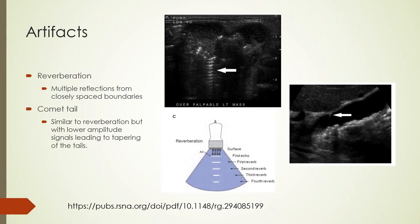Reverberations from a single structure are shown on this slide. The first echo is placed correctly at the object's location; the second echo is the first reverberation and the third is the second reverberation. Comet tail artifacts are similar but the tail is triangular and tapered due to low-amplitude signals, as visible on this slide.